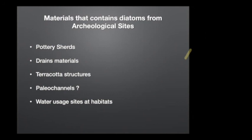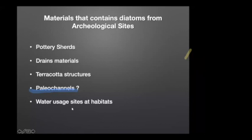Many sites also have paleo channels — previously existing channels that are now covered up — which can also be identified. Within a site, we can identify locations related to water: whether a pond was present, or even inside a home, whether a kitchen drain was there. That can be identified by diatoms because a different set of species thrives in such water conditions. With this, I conclude my talk and am ready to take questions.